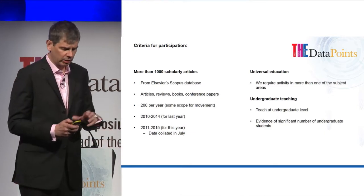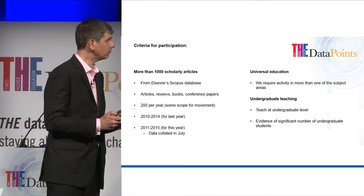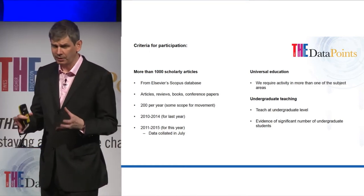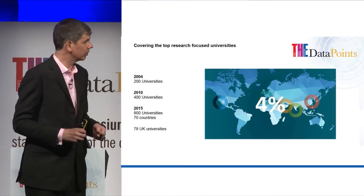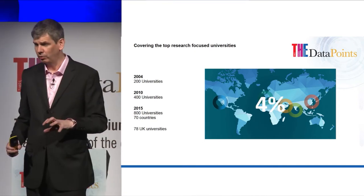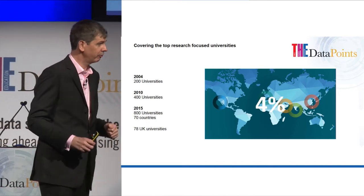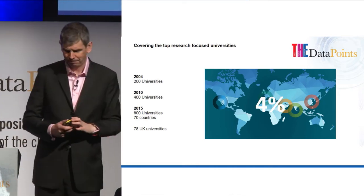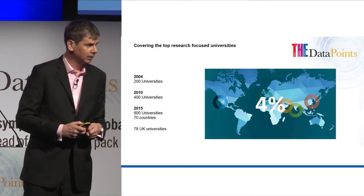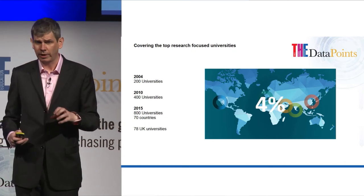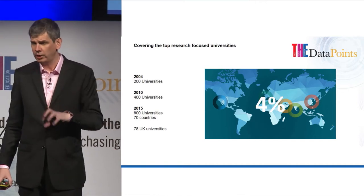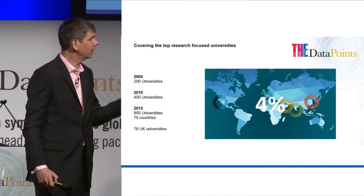To get into our rankings, you need to pass certain thresholds. First, we look for a certain level of productivity in terms of academic papers — we require universities to have 1,000 papers, which are either conference proceedings, journals or reviews, over a five-year period. Second, we're looking for universal institutions, not focused around a single very narrow area of research. Third, there has to be significant undergraduate teaching.